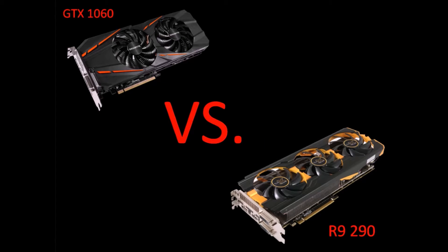Hey guys, welcome back. Today I'm going to be having a look at the performance gap between a GTX 1060 and an R9 290 using a couple of benchmarks. I'm going to be using Unigine Valley, 3DMark Fire Strike, and 3DMark Time Spy to test out the DirectX 12 capabilities of each card. So let's get right into it with the first benchmark.